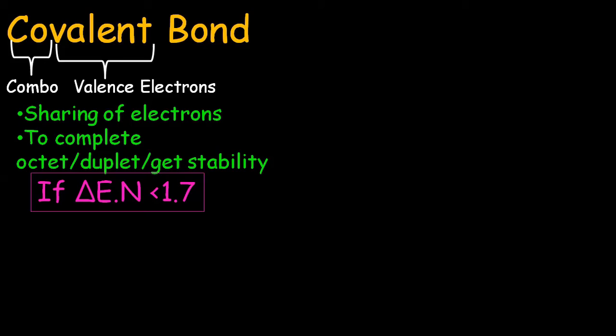Let's discuss the nonpolar covalent bond via certain examples. Hydrogen has electronic configuration of 1s¹. It has one electron in its 1s valence shell.